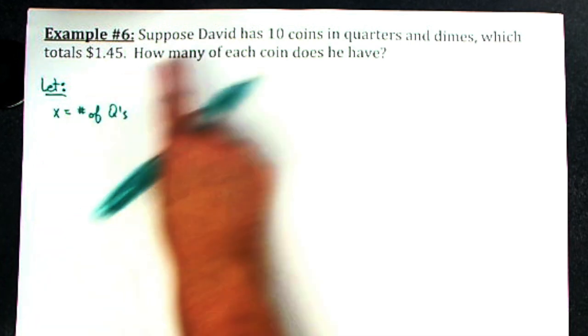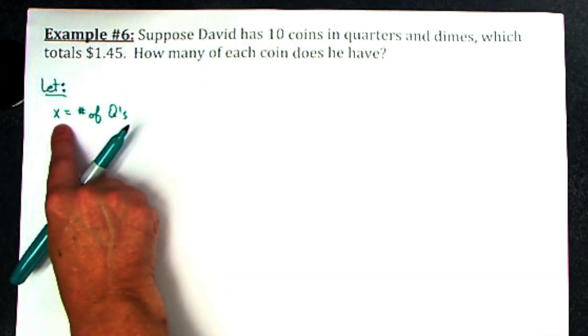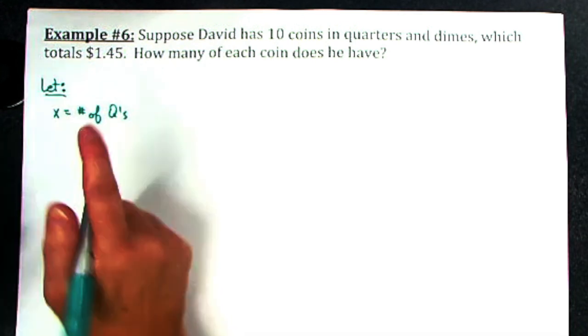Someone said six because there's 10 total, right? If it was four quarters, then the number of dimes would have to be six because four plus six is 10.